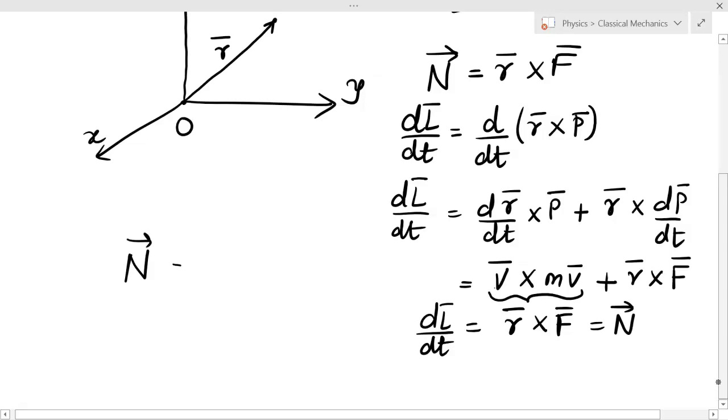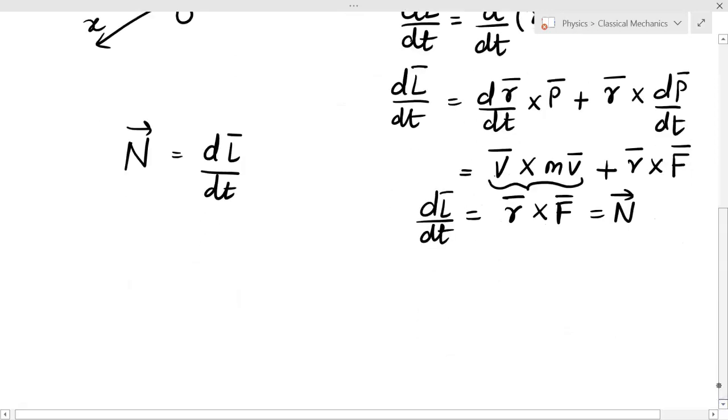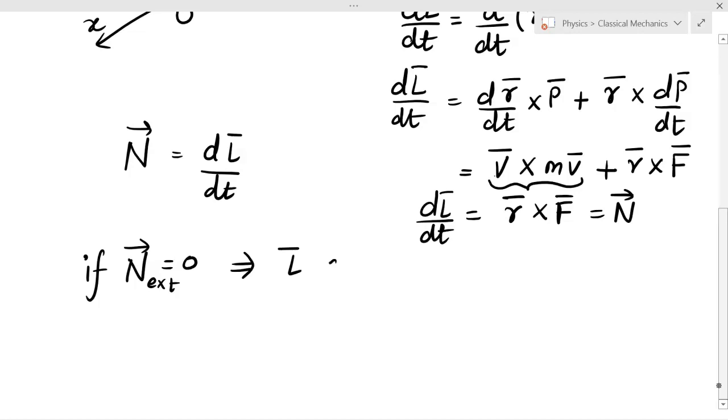So N̄ = dL̄/dt. This leads us to the conservation theorem of angular momentum. What does it say? If total external torque is zero, then the angular momentum L̄ is conserved. When there is no torque, the angular momentum L̄ will remain the same.